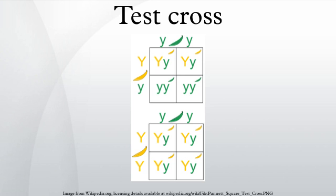Since the homozygous recessive individual can only pass on recessive alleles, the alleles the individual in question passes on determine the phenotypes of the offspring.